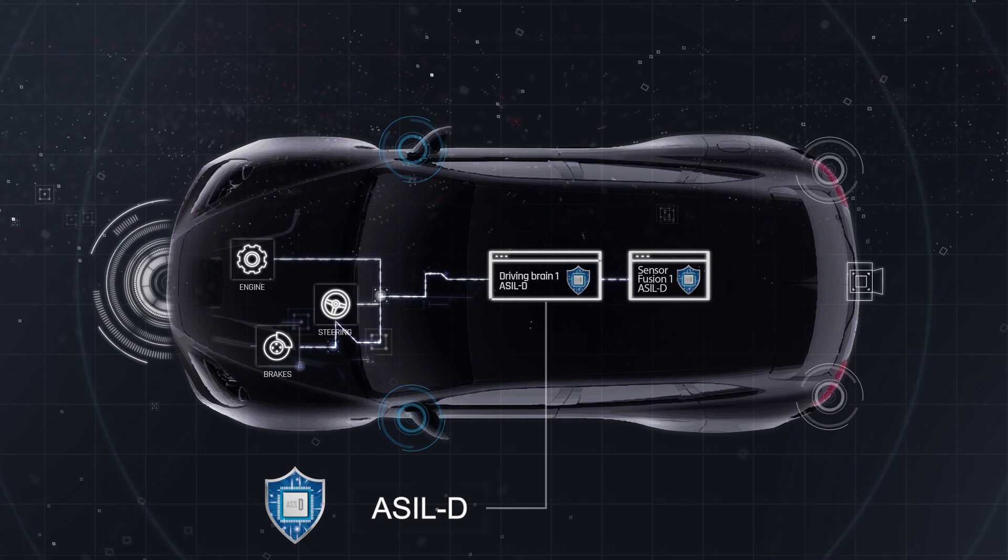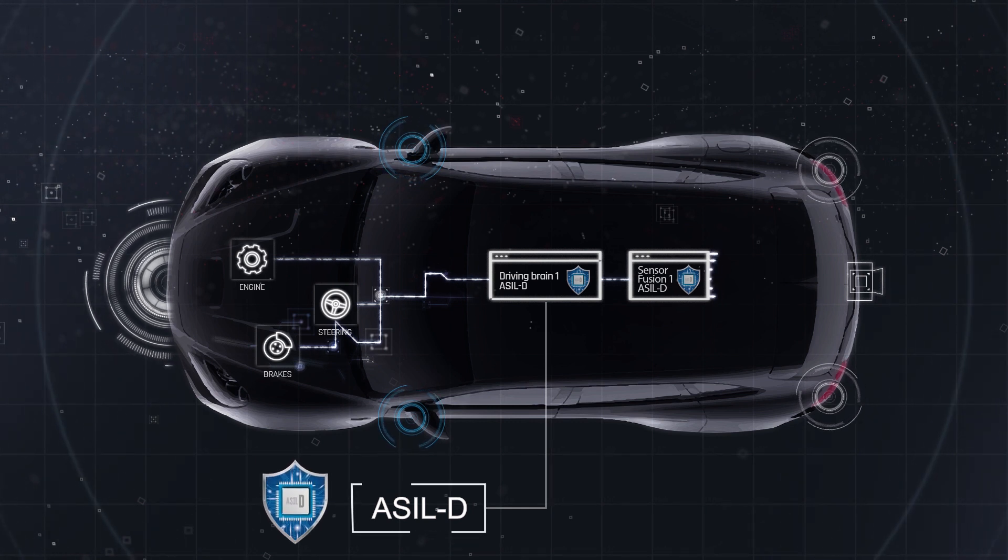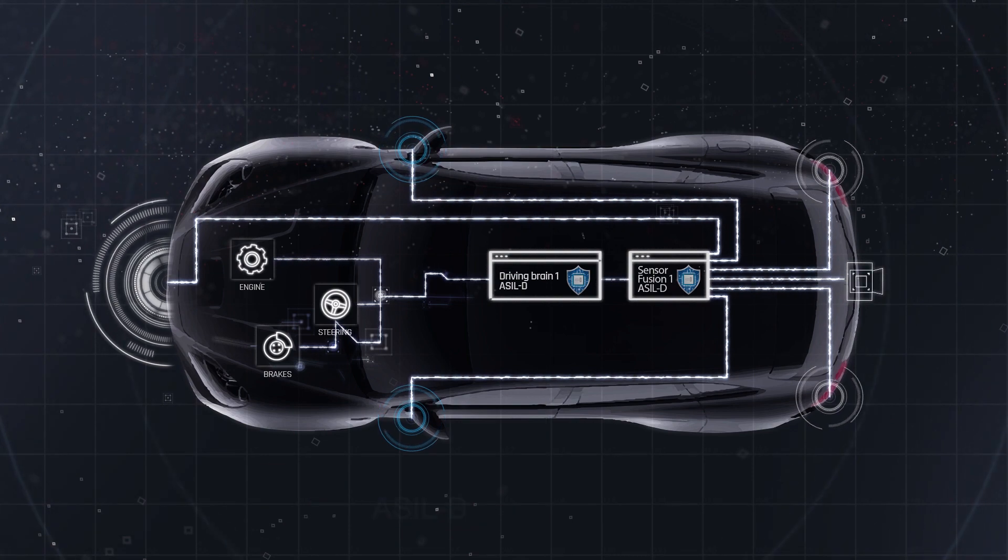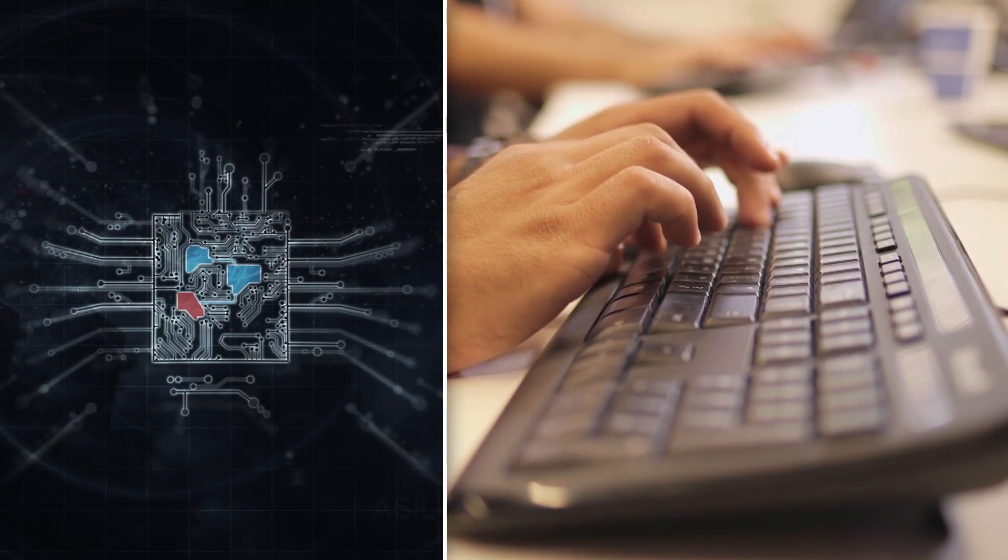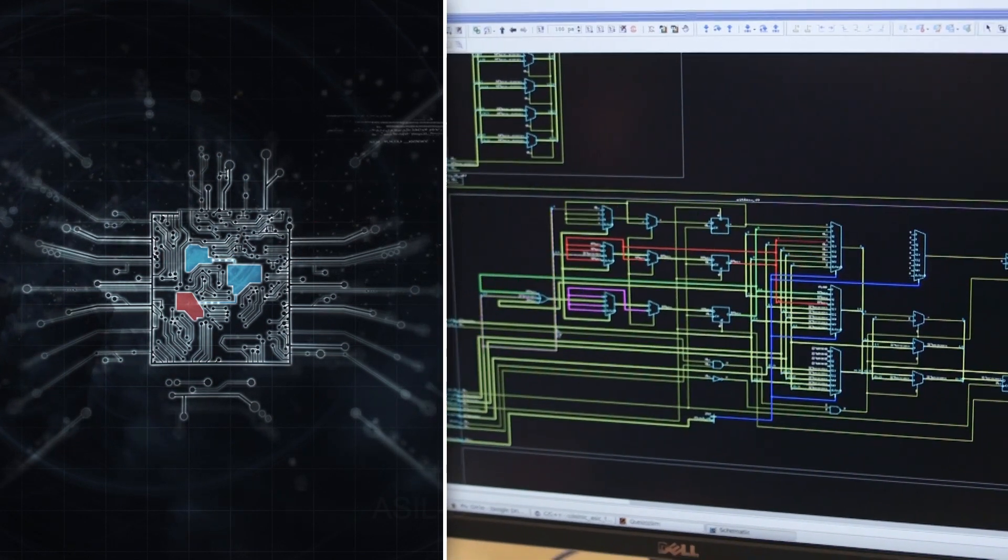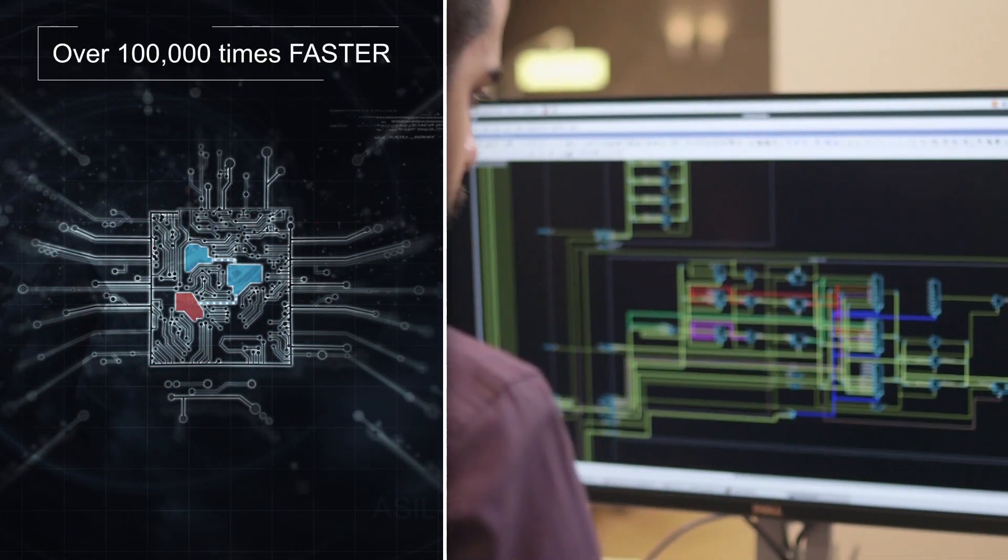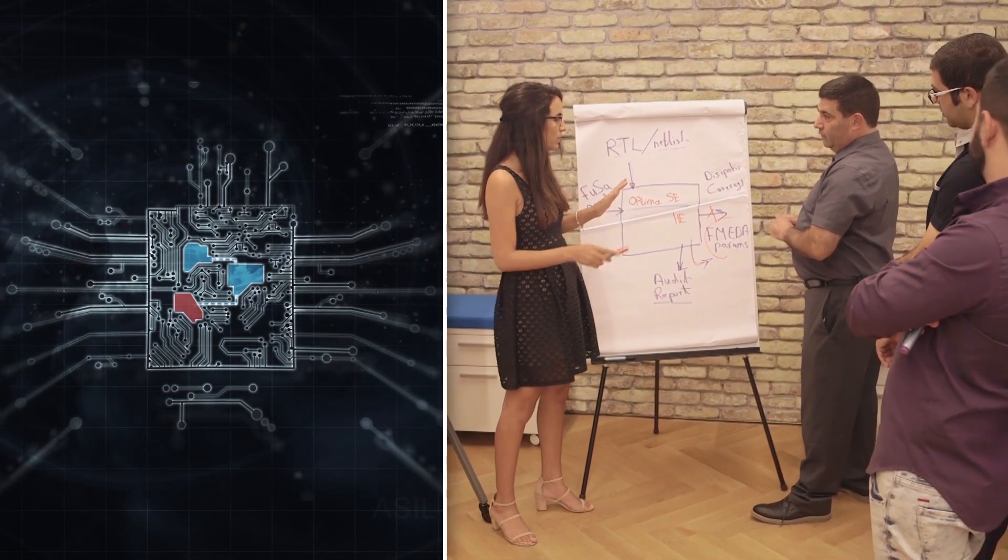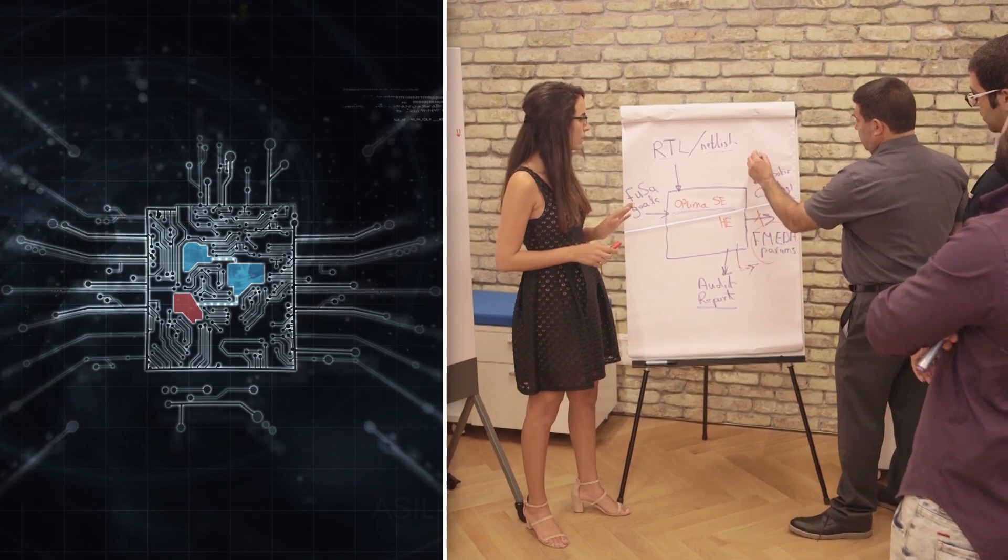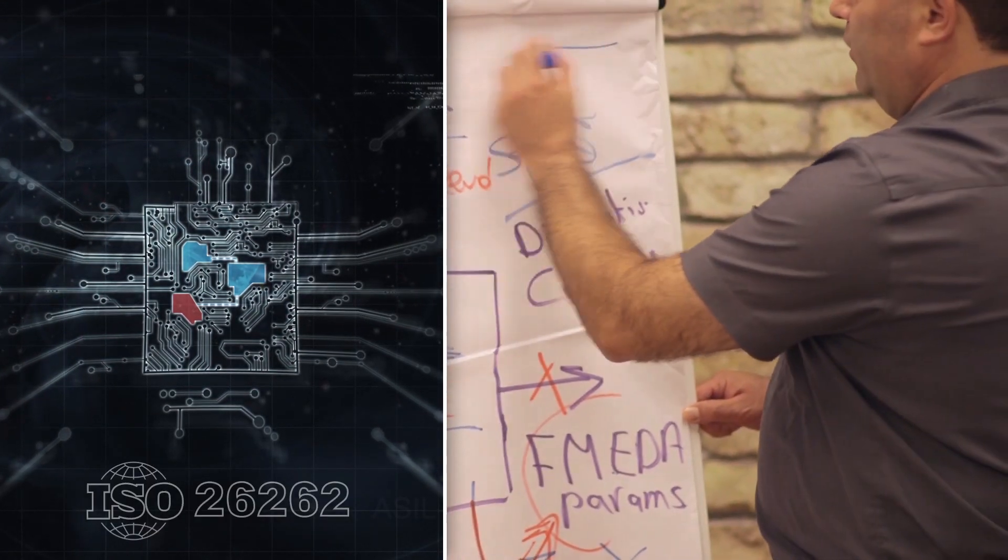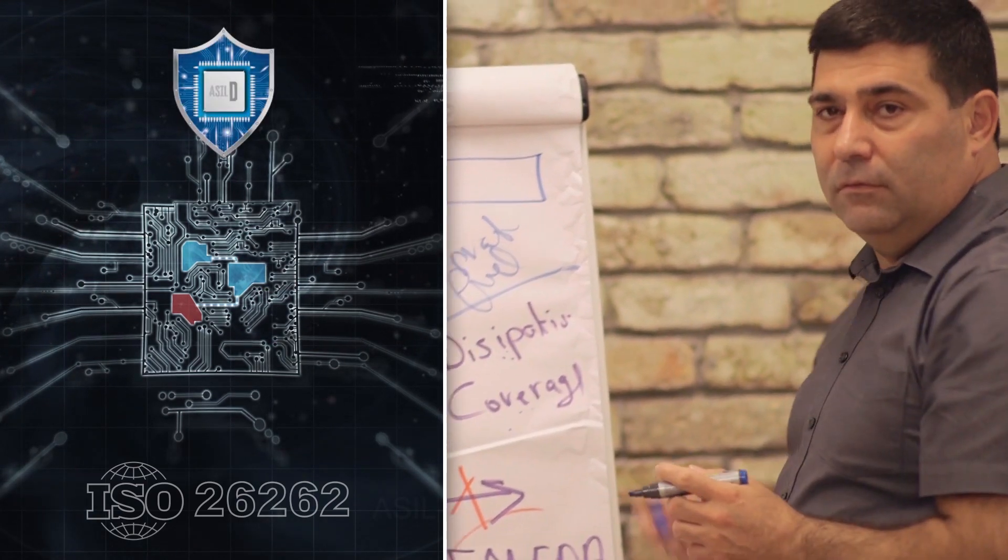Optima offers automated tools for automotive semiconductor engineers that solve all functional safety challenges they face. With Optima, chip designers can exhaustively test or fault simulate their chips, SOCs and IPs over 100,000 times faster than existing tools allow, adding minimal redundancies inside their chips to achieve and exceed the highest safety levels of ISO 26262, ASIL D.